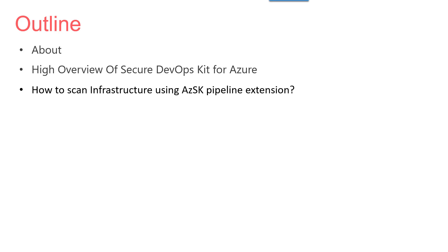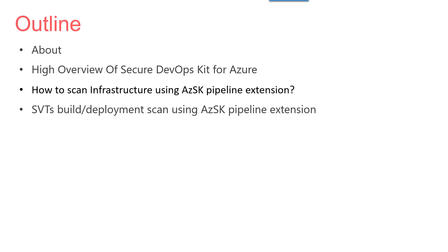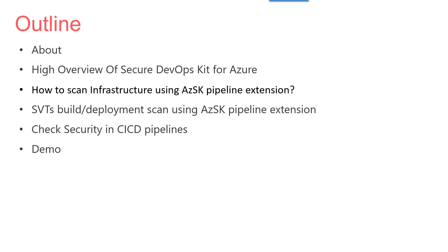We get an overview about this extension as part of the DevOps Kit for Azure. Then we will talk about security verification tests as part of the build and deployment pipeline using the DevOps Kit for Azure pipeline extension. We will also explain the typical process for scanning for security as part of the CI/CD pipeline. Then we will see a demo which includes installing the extension on the Azure pipeline, then configuring a build definition which will run an Azure pipeline to scan infrastructure as part of the continuous integration pipeline.